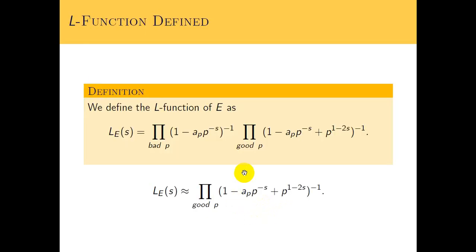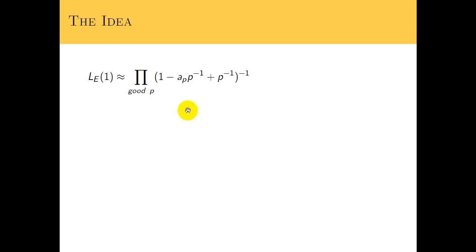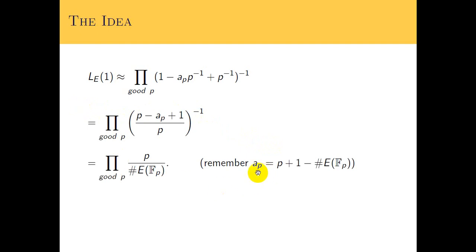We're about to present a heuristic argument on why the Birch–Swinnerton-Dyer conjecture kind of should be true — an idea behind why it should be true. Strictly speaking, this product will only converge when the real part of s is greater than 3/2, but we're going to plug in 1 and see what we get, to provide some intuition on why they felt their conjecture should be true. When we plug in 1 to the L-function and multiply by P over P, we get this. Remembering our formula for how we define the a_P's, we just invert the fraction and get our final result.